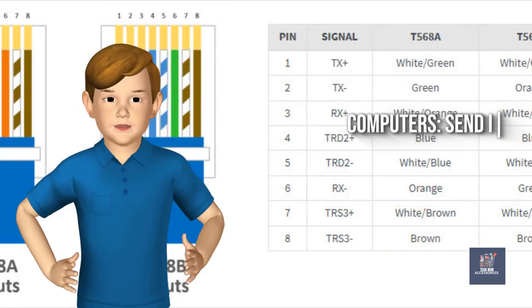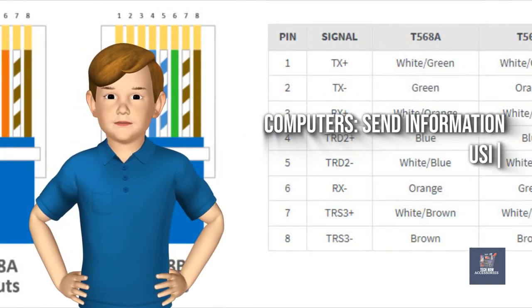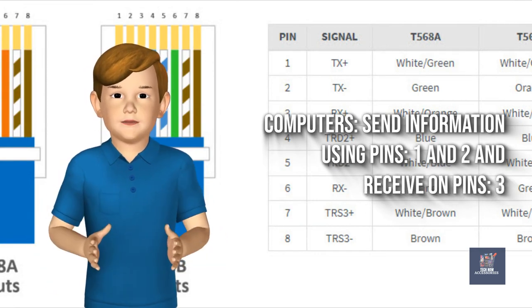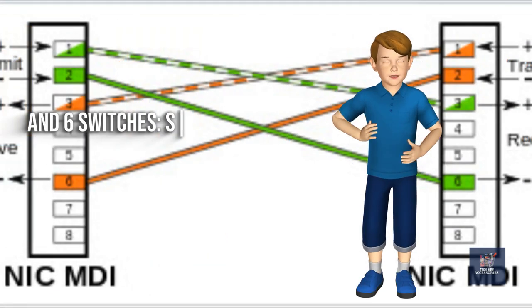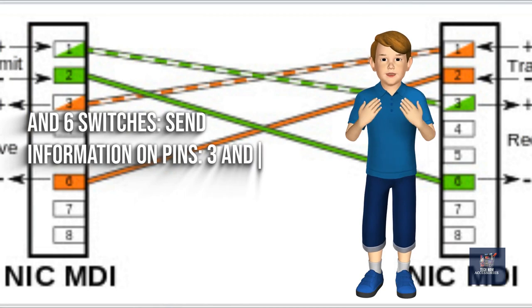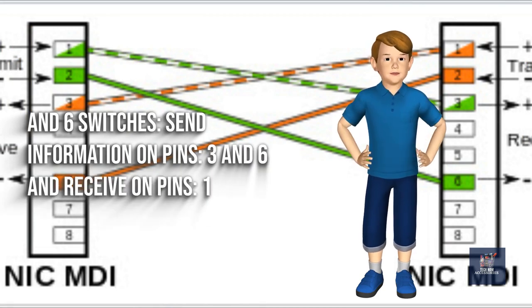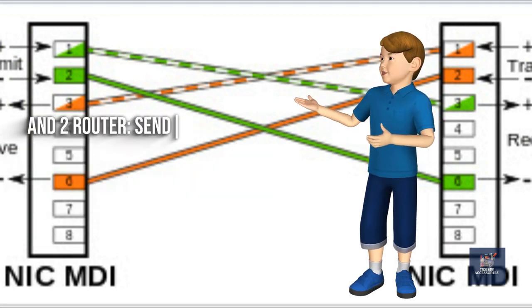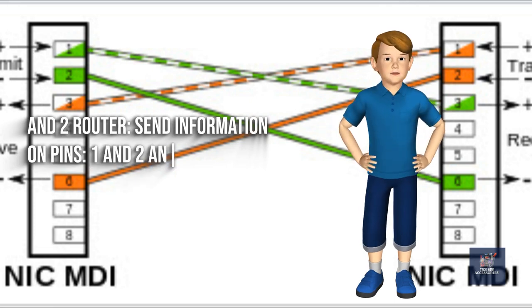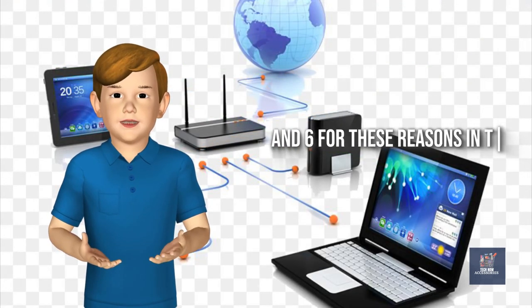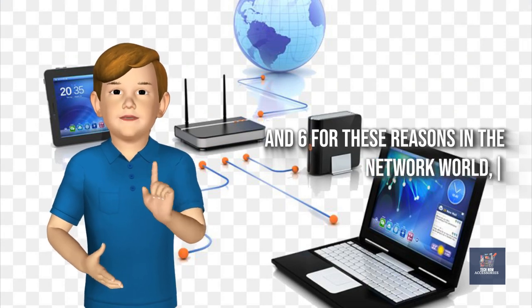Computers send information using pins 1 and 2, and receive on pins 3 and 6. Switches send information on pins 3 and 6, and receive on pins 1 and 2. Routers send information on pins 1 and 2, and receive on pins 3 and 6.